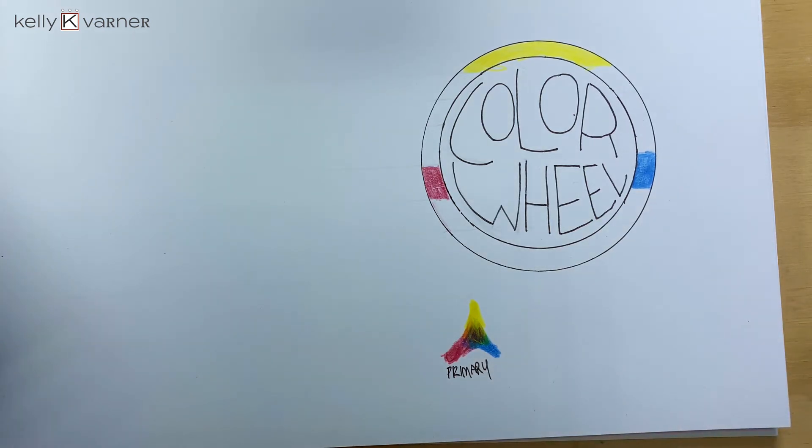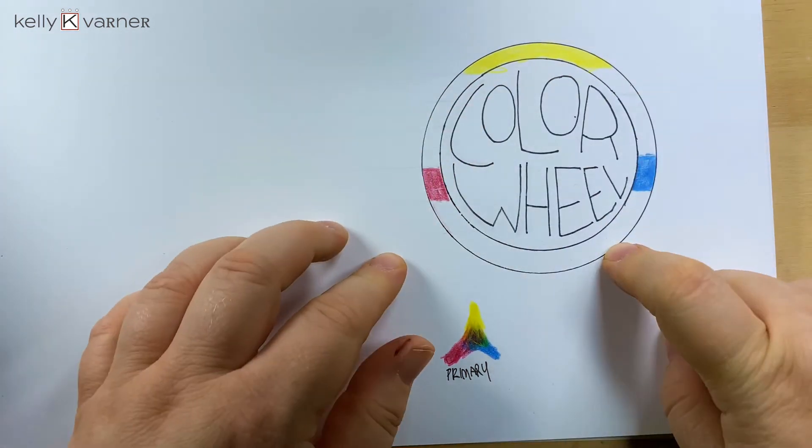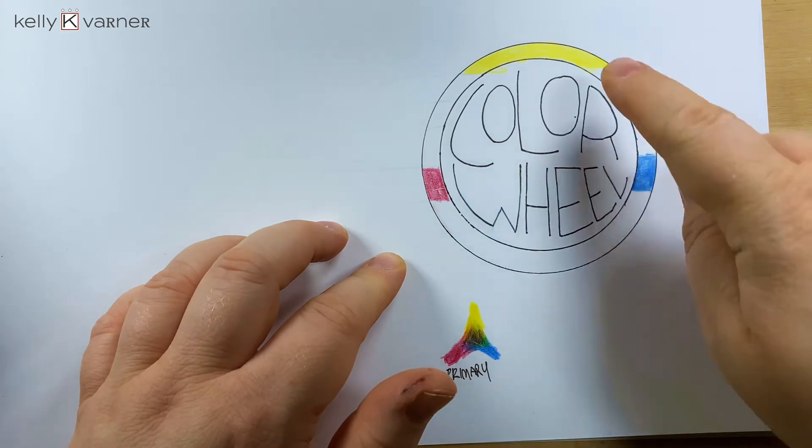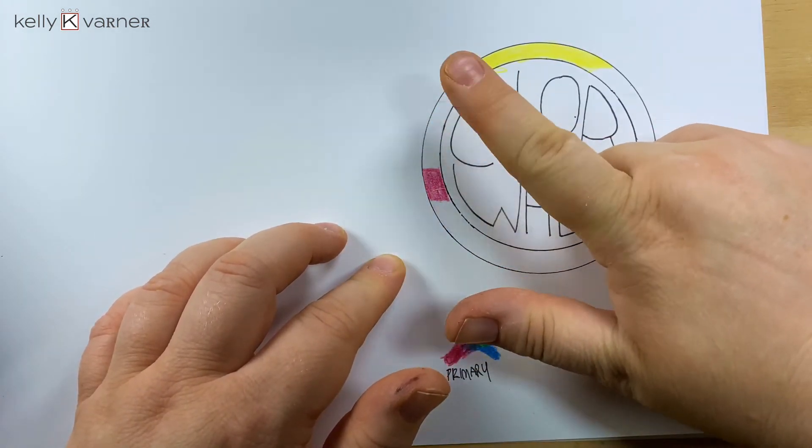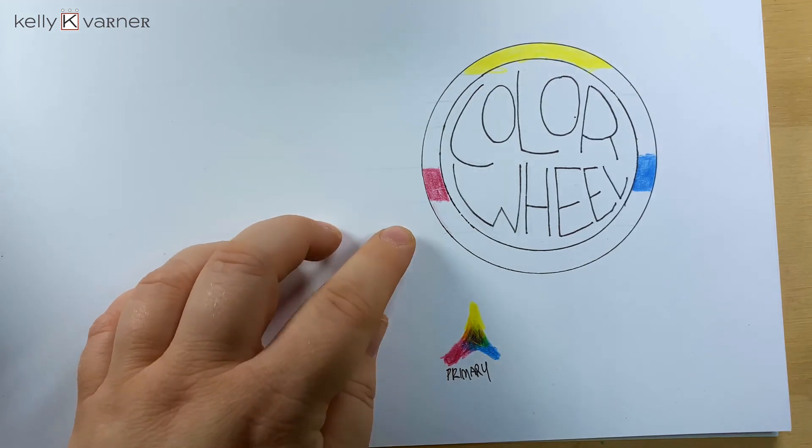That is one of your building blocks of your colors, your primary triad. Once you have your primary colors, the way this color wheel is set up, between those colors is going to be the color that they make.